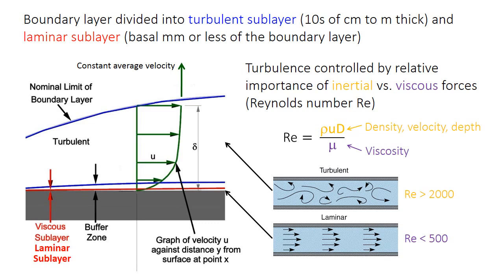Most boundary layers in natural flows are on the order of tens of centimeters, or maybe a few meters thick, and they're mostly turbulent. Turbulent flow is one where the flow paths are highly irregular — there are lots of eddies and the water flows in really complicated swirling patterns. This describes nearly all natural water flows you've probably seen, like rivers or the ocean. Turbulence is technically described by a constant called the Reynolds number, which is the ratio of inertial to viscous forces in that fluid. Turbulent flows have larger Reynolds numbers, and inertial forces are strongly influenced by the velocity of the flow — density, velocity, and depth all matter, but velocity is the key factor.